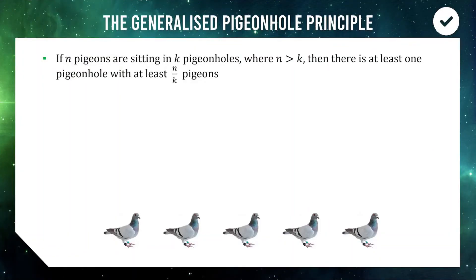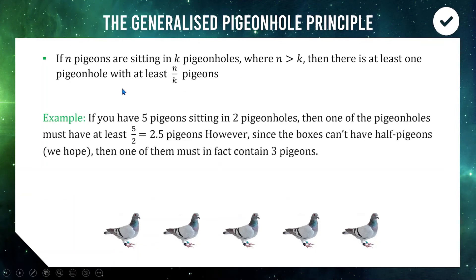To make this more general: if we have n pigeons sitting in k pigeonholes where there are more pigeons than pigeonholes, then there is at least one pigeonhole with at least n divided by k pigeons. For example, with five pigeons in two pigeonholes, n over k is 5 divided by 2 which is 2.5. Since pigeonholes can't have half pigeons, at least one must have three — possibilities like 2&3, 3&2, 4&1, etc., all have at least one hole with three.